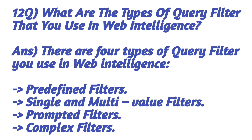What are the types of query filters used in Web Intelligence? There are four types of query filters used in Web Intelligence: predefined filters, single and multi-value filters, prompted filters, and complex filters.